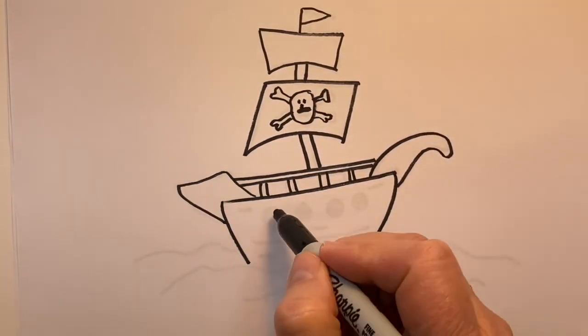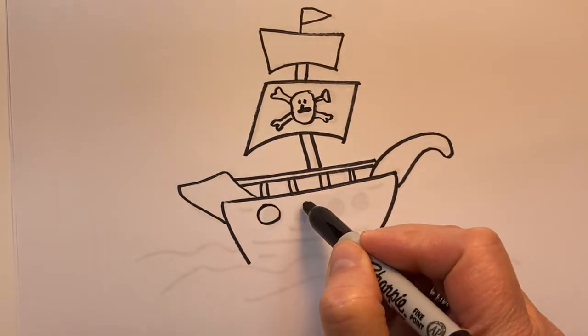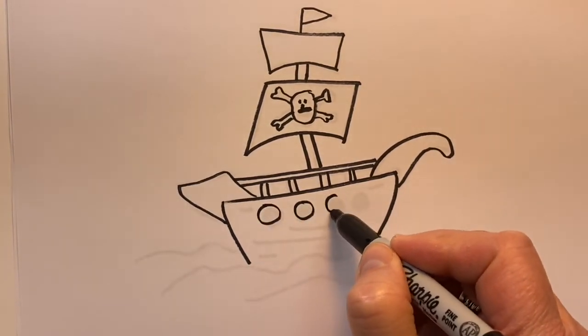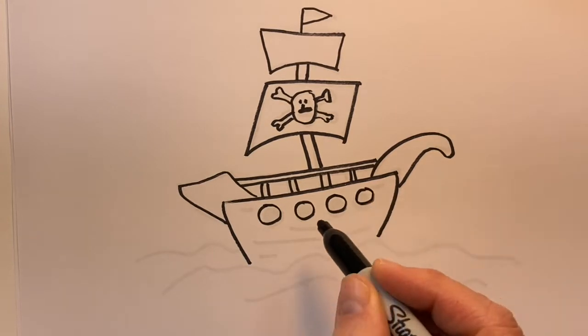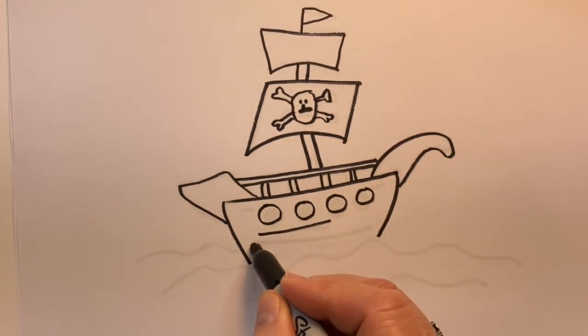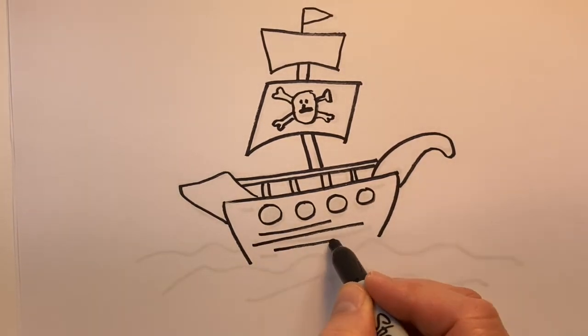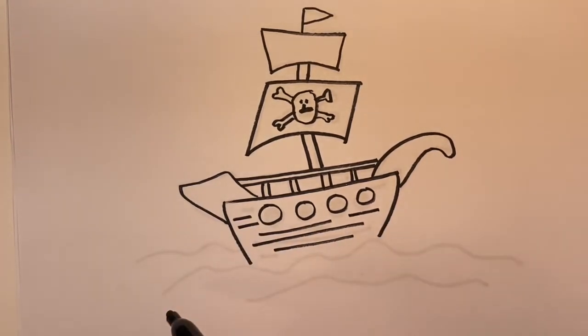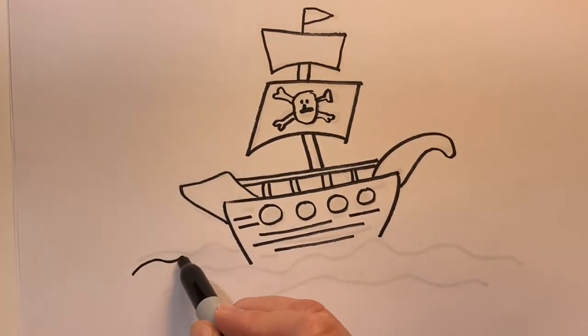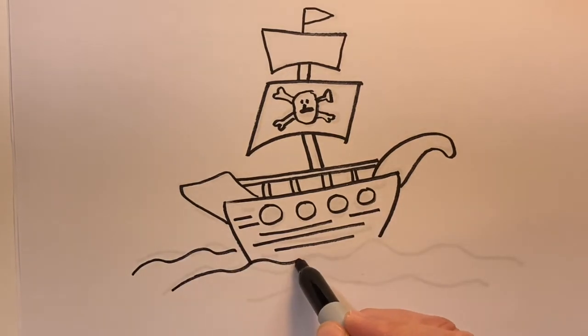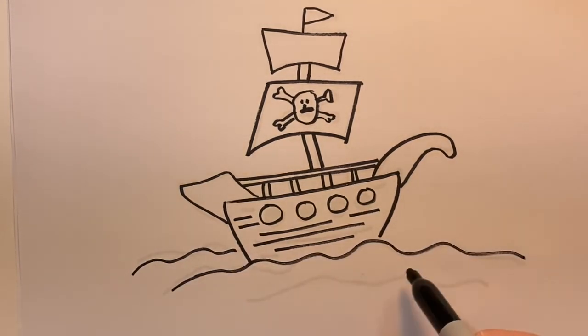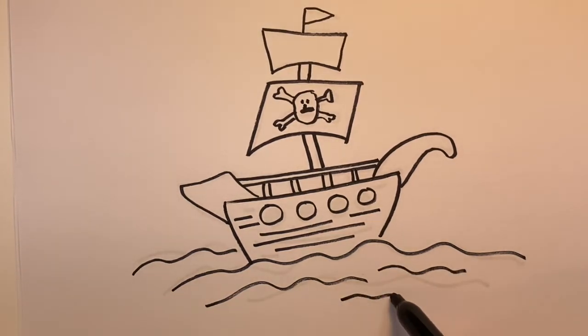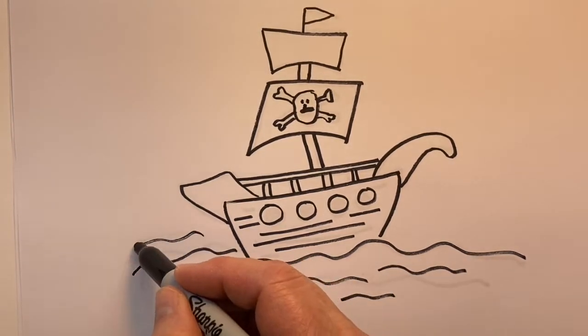We have some windows in the ship. Circle windows and just some other slanted lines to indicate the wood of the boat or the ship. And some waves stirred up by the ship or surrounding the ship.